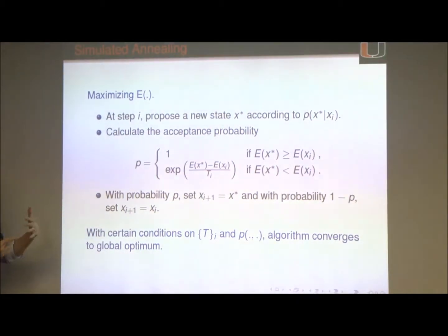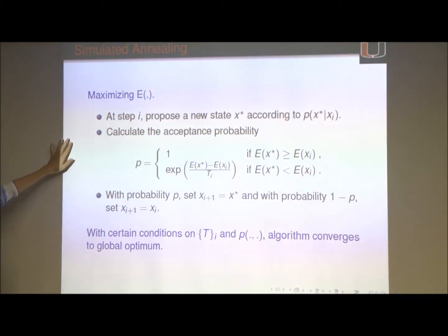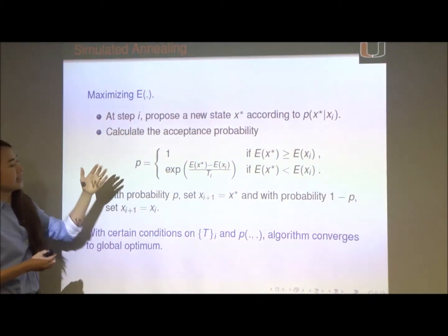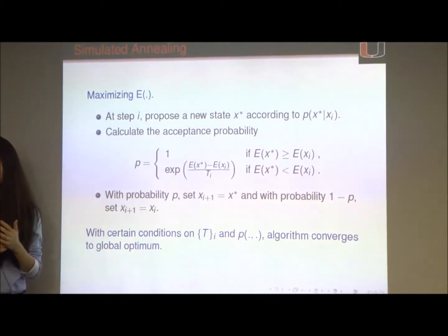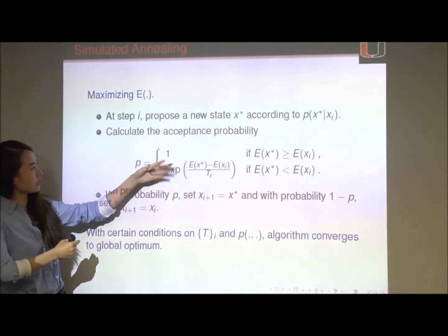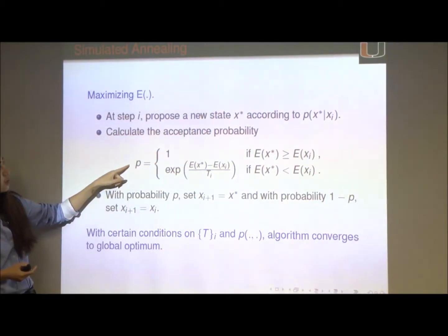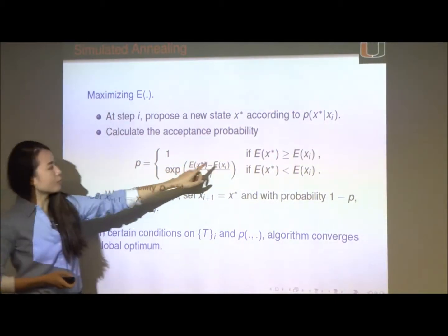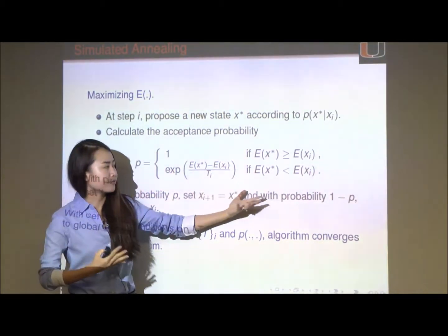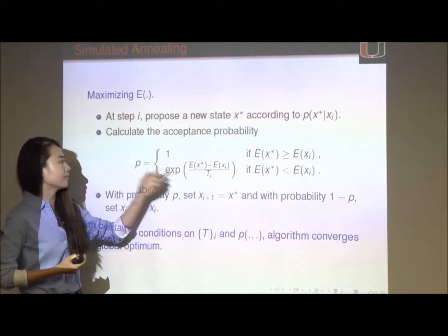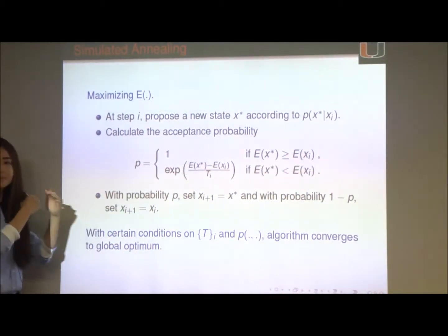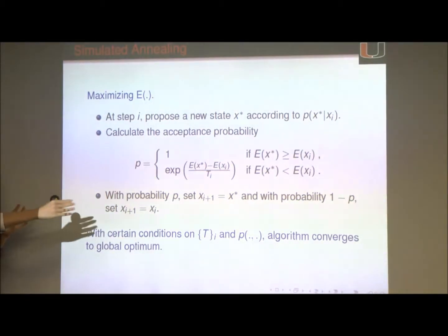This is where the simulated annealing idea comes into play. In a simulated annealing algorithm, it's more like a modified Metropolis-Hastings where the goal is to maximize an energy function or objective function. At each step i, you have a current state x_i, a proposal distribution of your choice, and you propose a new state which you either accept or reject. If the new proposed state has a higher energy, we accept it with probability 1; if it has a lower energy or lower objective function value, we accept it with a probability smaller than 1. The reason we call it simulated annealing is because we have a temperature parameter that keeps decreasing from a very large value until it gets closer to 0.